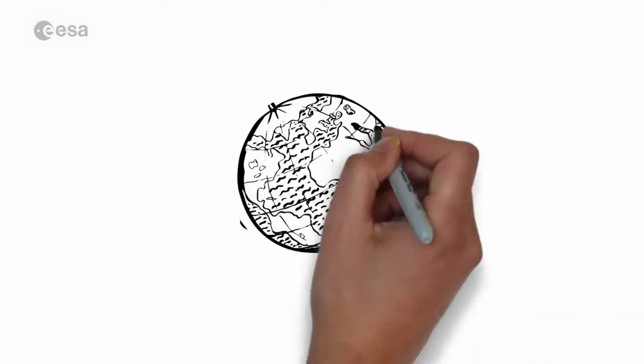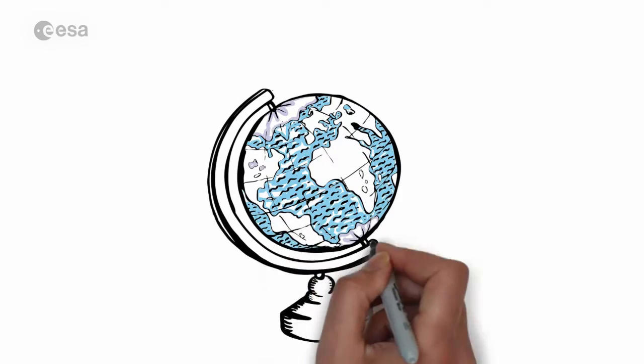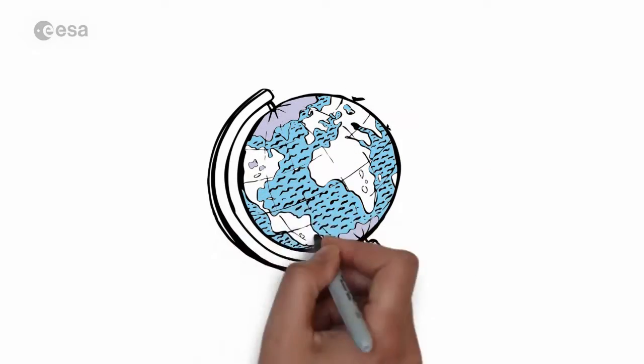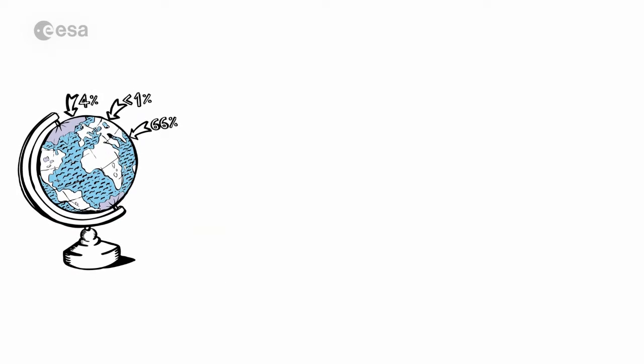This is our home planet Earth. It's called the Blue Planet because most of it is covered by water. About two-thirds is covered by oceans and another four percent by fresh water in the form of ice sheets, glaciers, lakes and rivers.